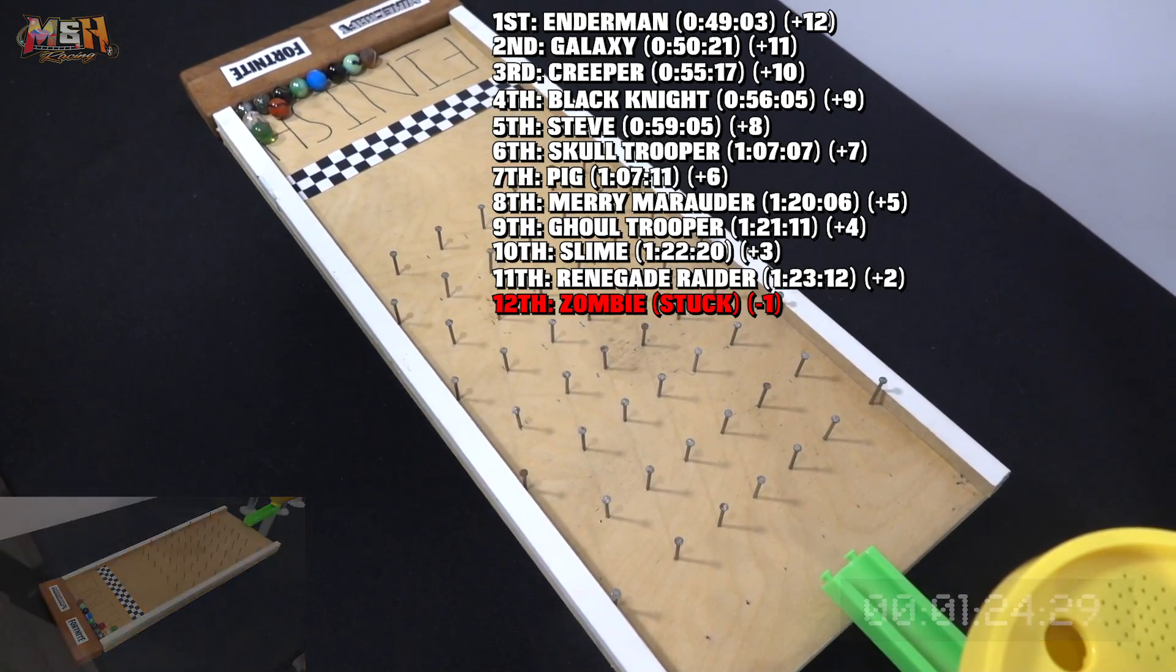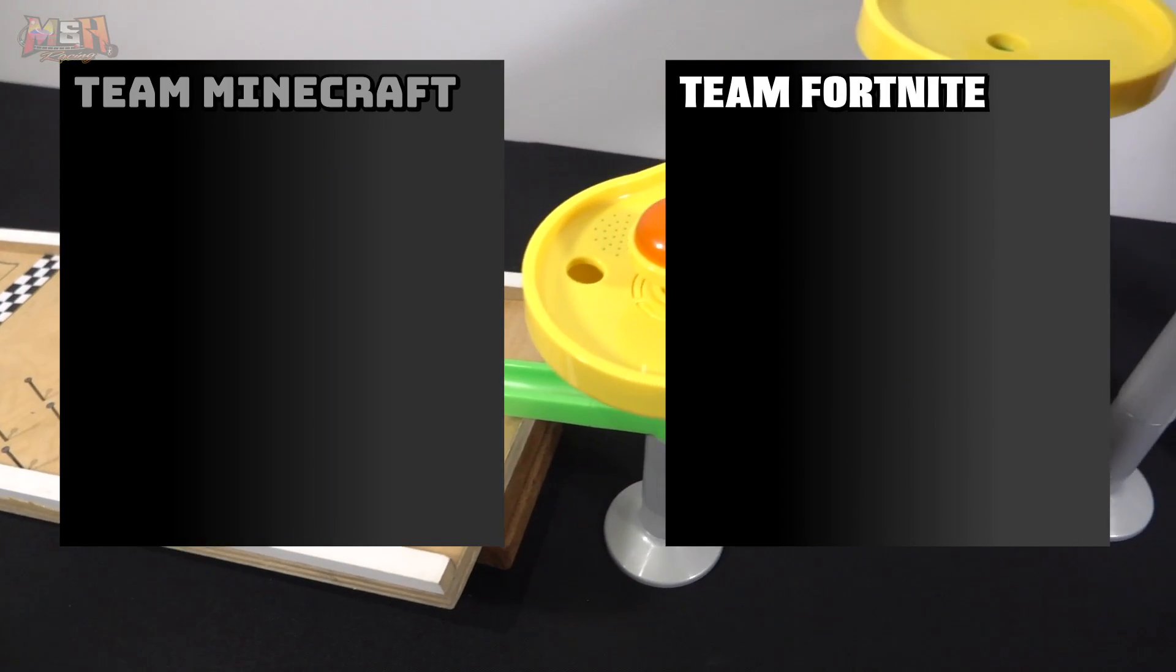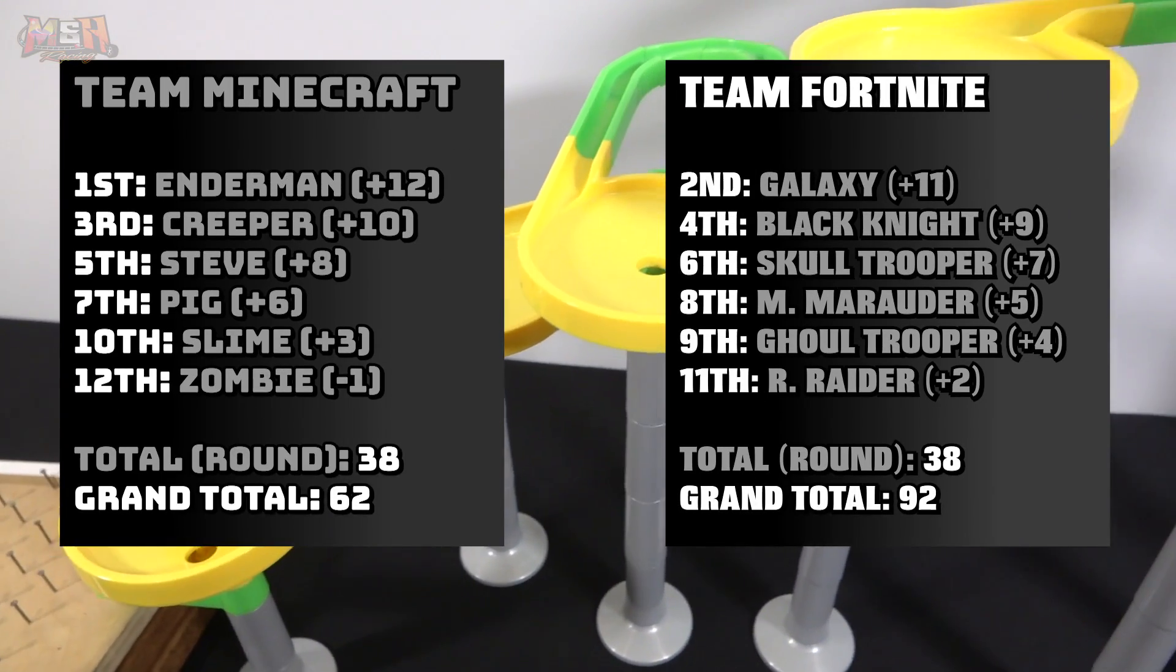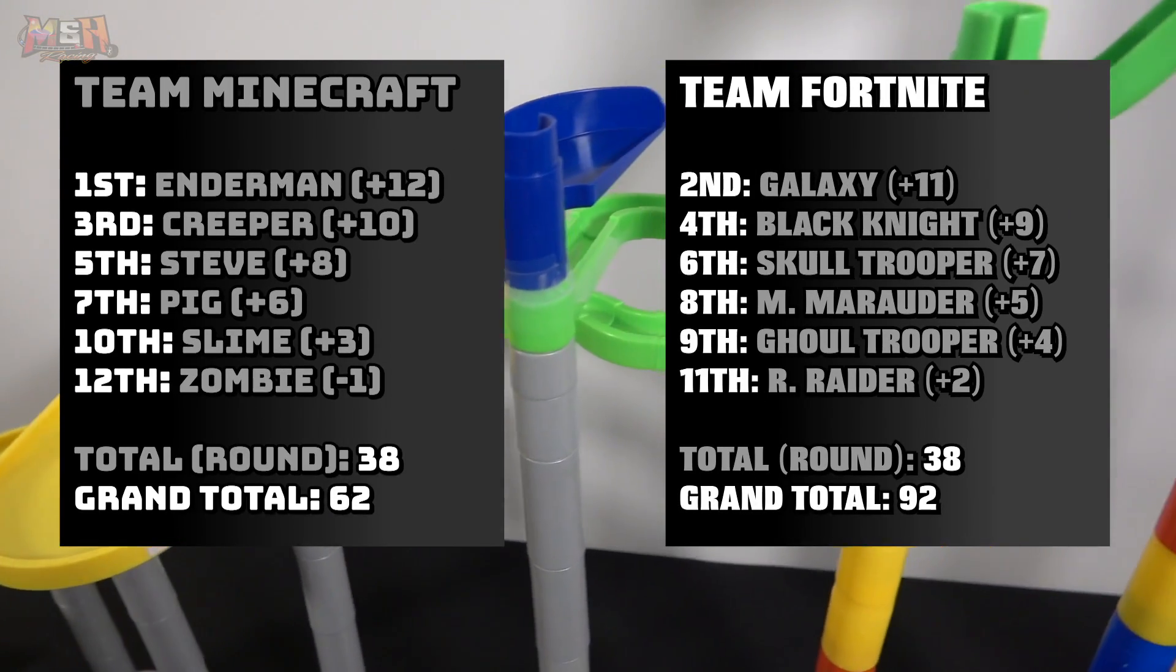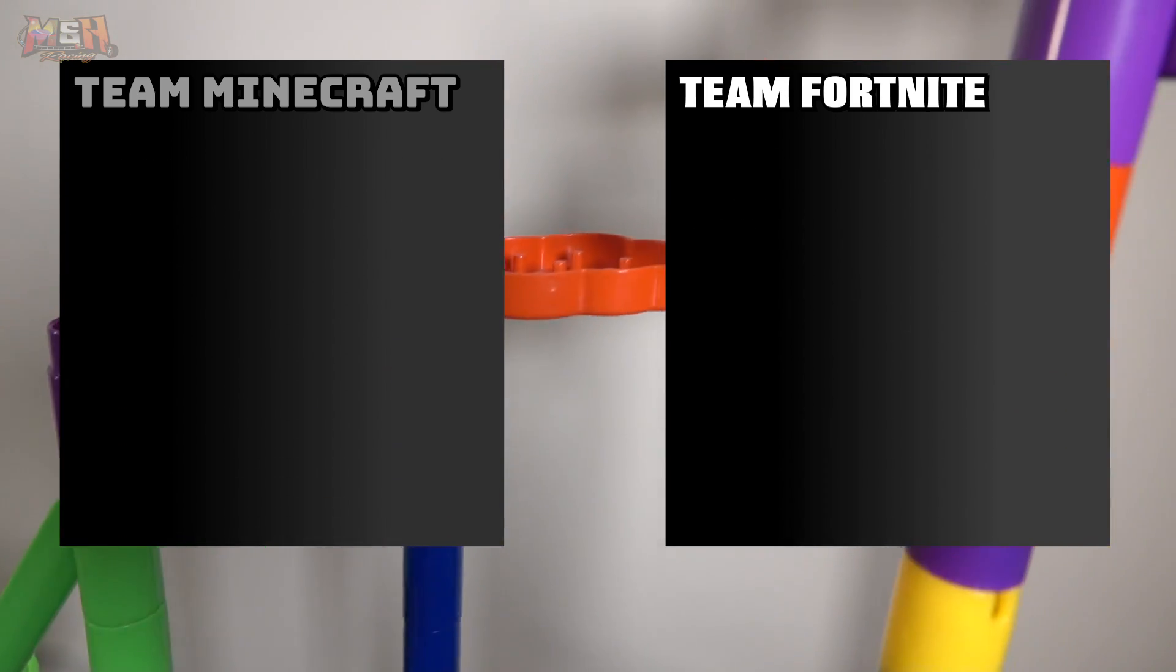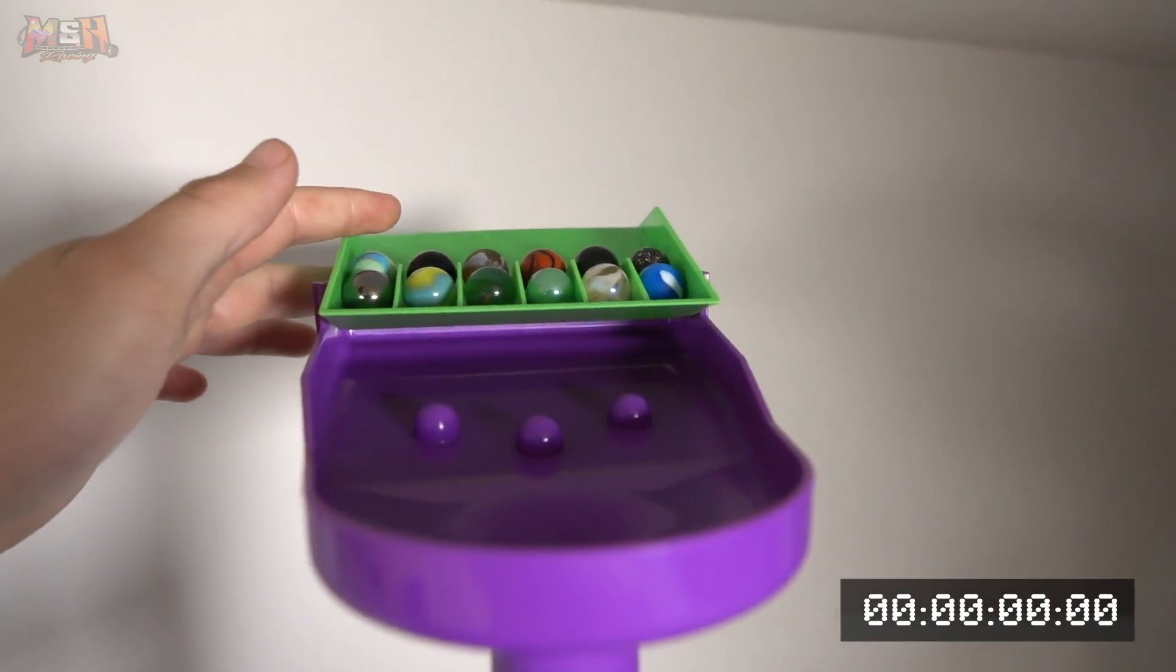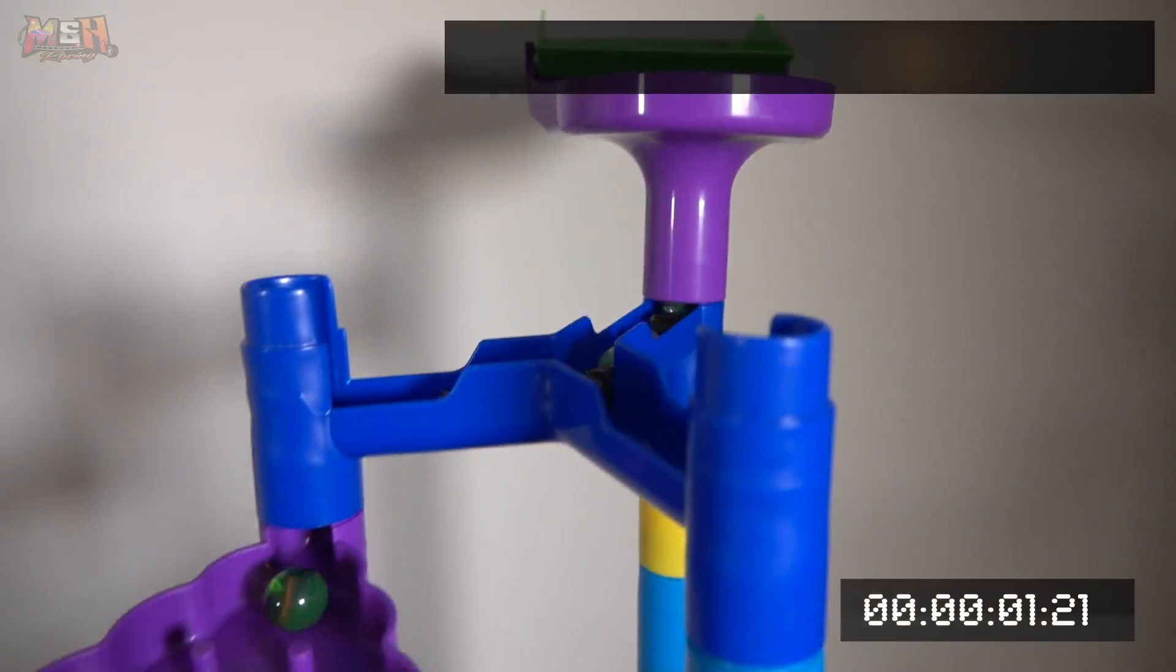We have Merry Marauder placing eighth, Gold Trooper ninth, Slime tenth, Renegade Raider eleventh, and Zombie doesn't even complete the course, which will give him a negative one penalty. Although team Minecraft fared better, Fortnite still in the lead by 30 points, with both of teams scoring 38 points in round two. And now round three. Minecraft still in the front row.